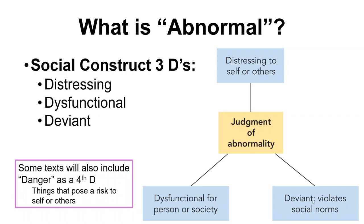I mixed up deviant and dysfunctional — I apologize, I should actually read the slides. Deviant is violating social norms. Dysfunctional is that it prevents you from functioning in a normal setting. Some texts also add a fourth D, which is danger — not so much making people uncomfortable, but is there a potential for physical harm? If we have extremes for any or all of these, that's when we'd be much more likely to label a behavior as abnormal and something that needs a diagnostic label.